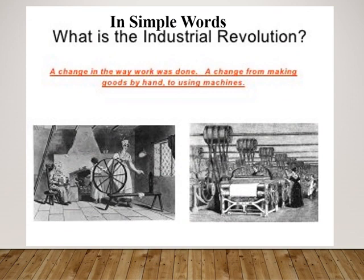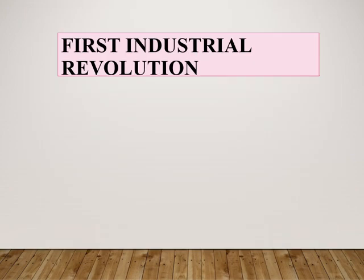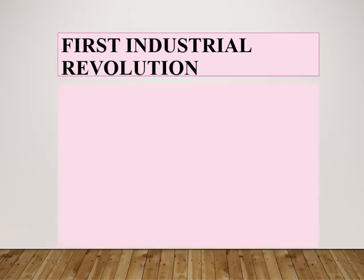In simple words, what is the Industrial Revolution? It is a change in the way work was done — a change from making goods by hand to using machines.